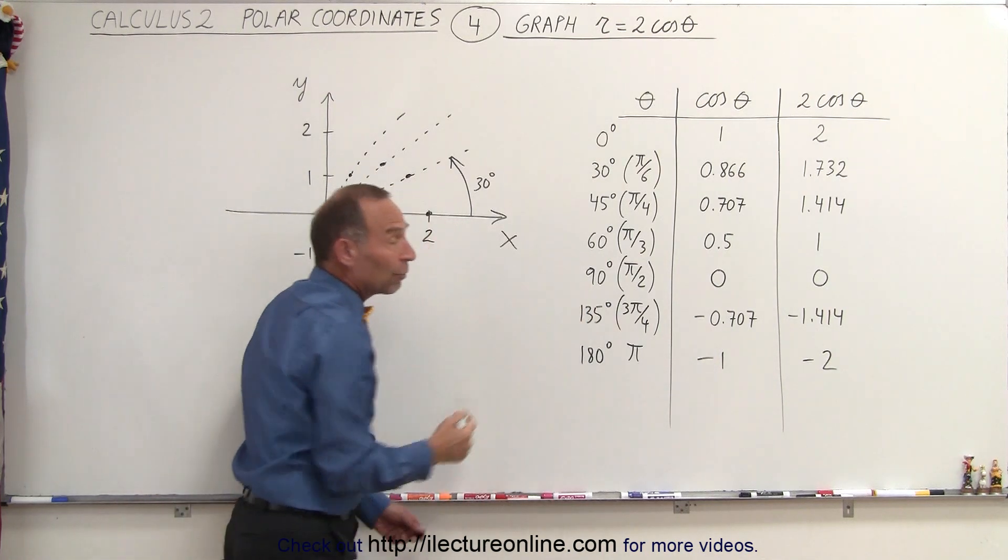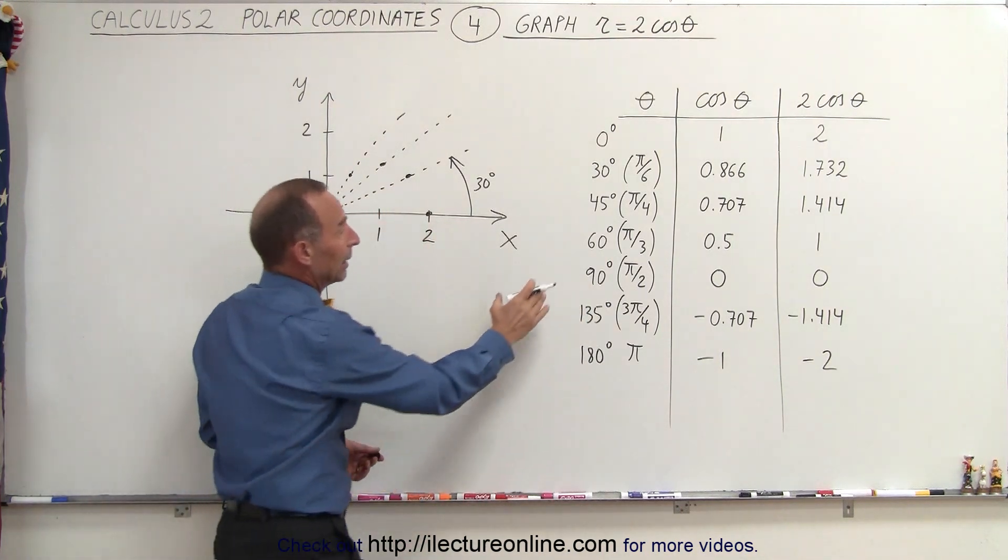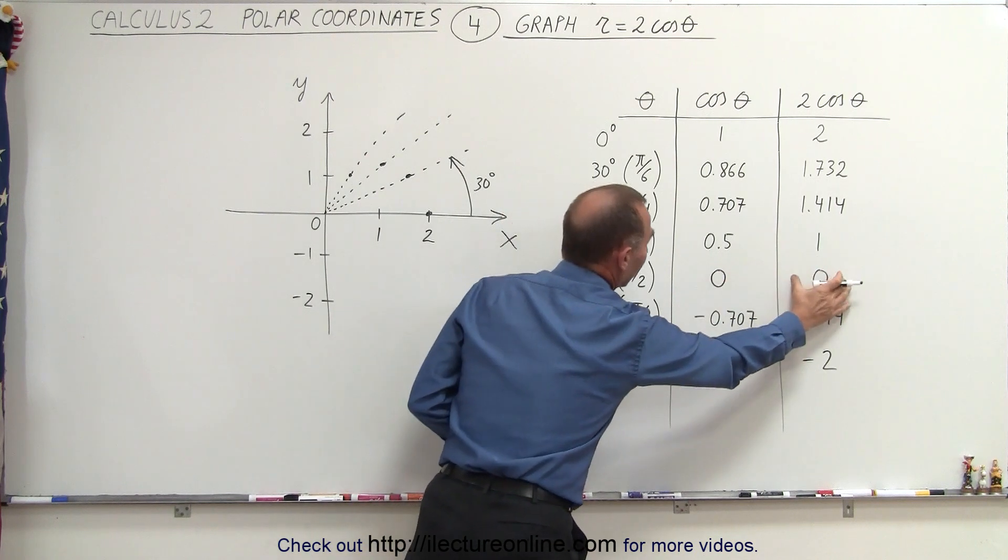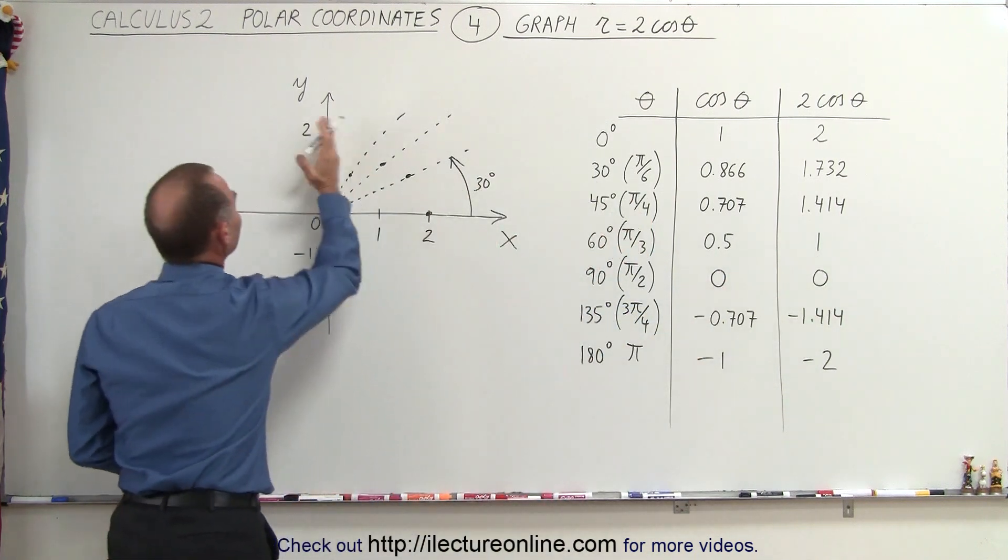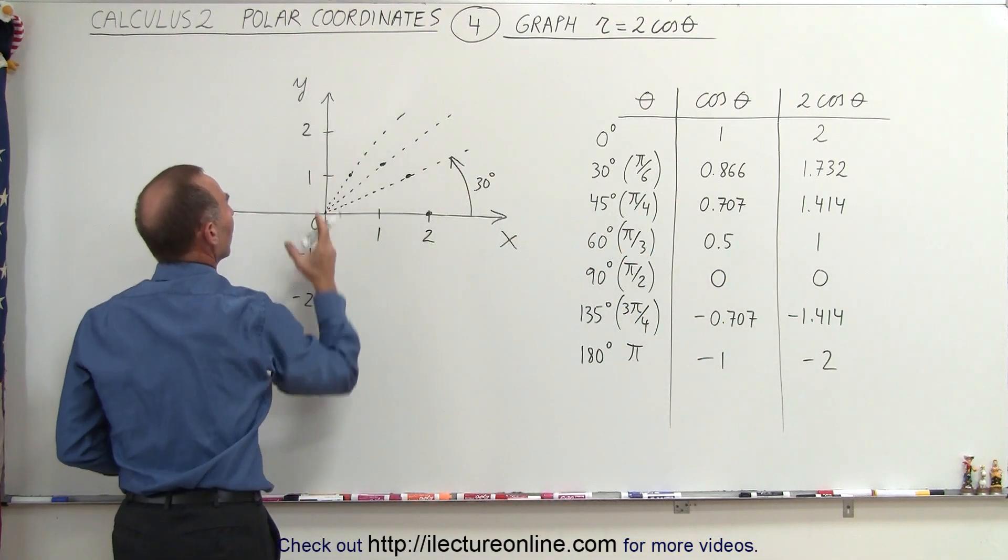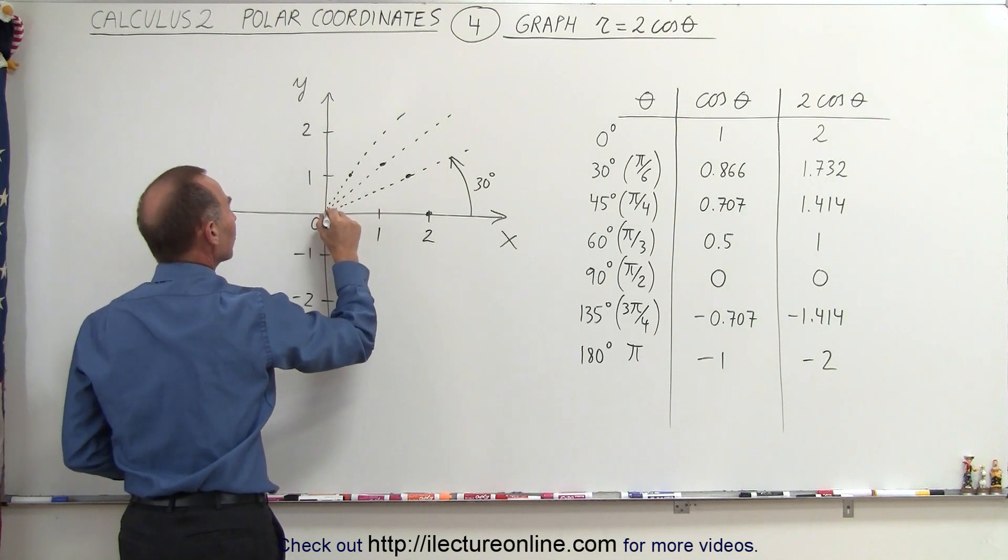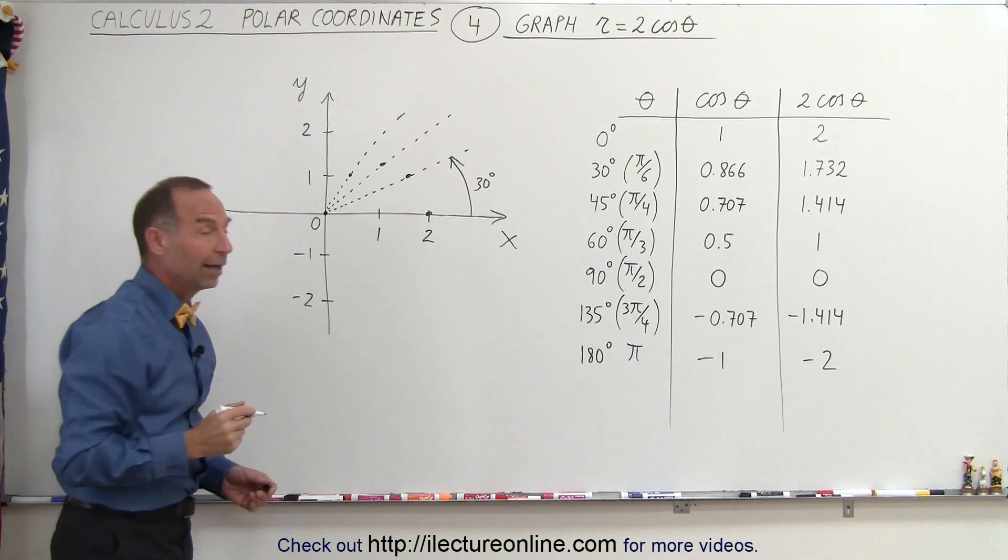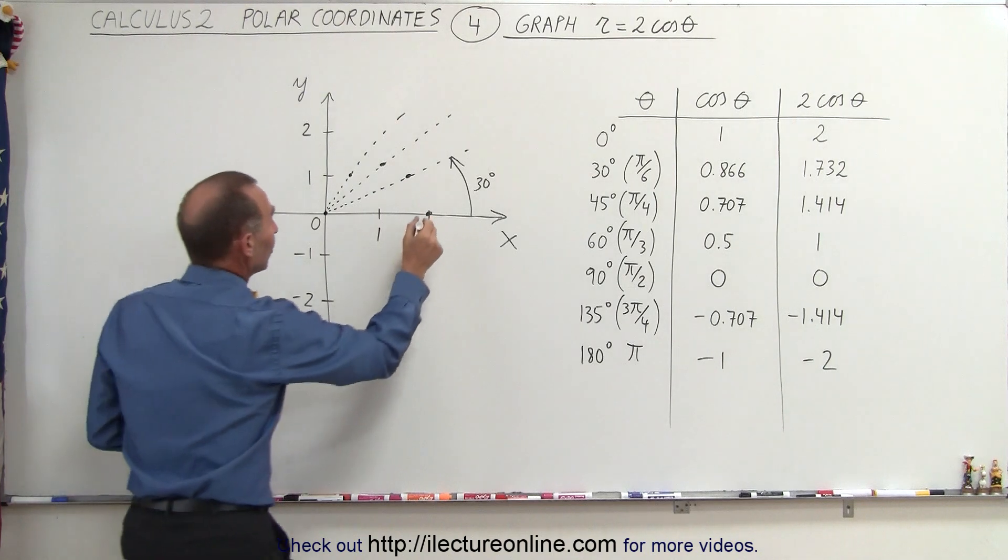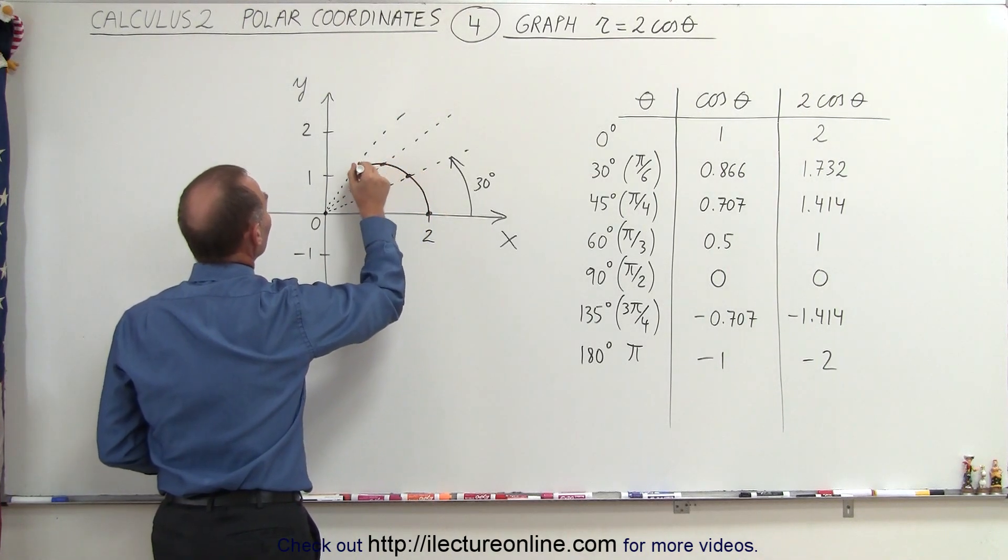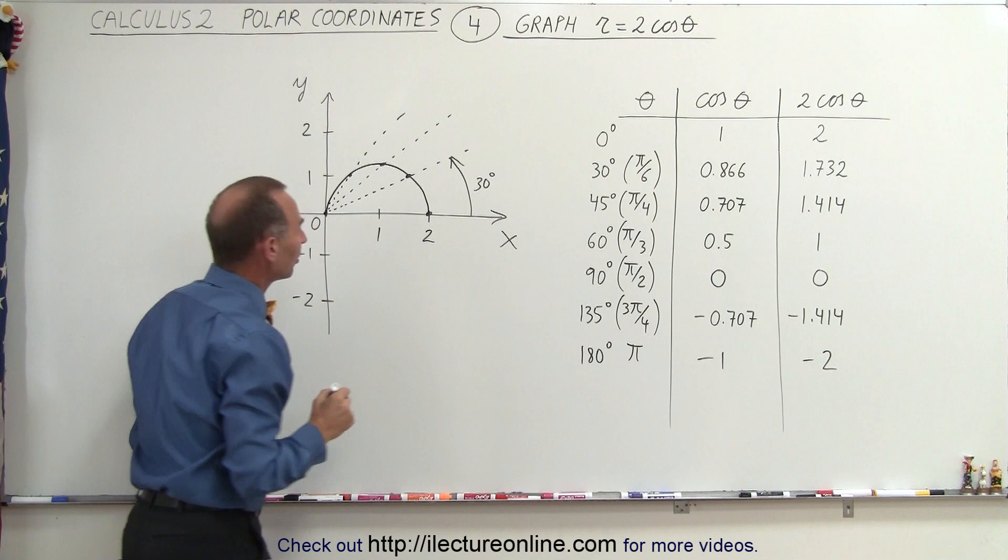And finally, when we go to 90 degrees, which is pi over 2, the cosine of that is equal to 0, twice that is equal to 0. So we're up at 90 degrees, which is along the y-axis. The distance from the origin is 0, so we have that point right there. And now when we connect those points, notice what we get. We get something that looks just like a semicircle.